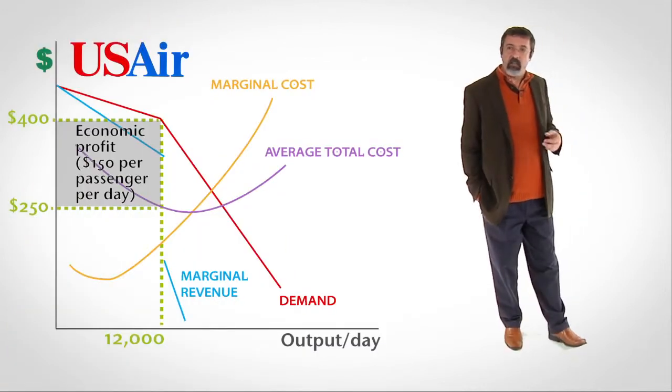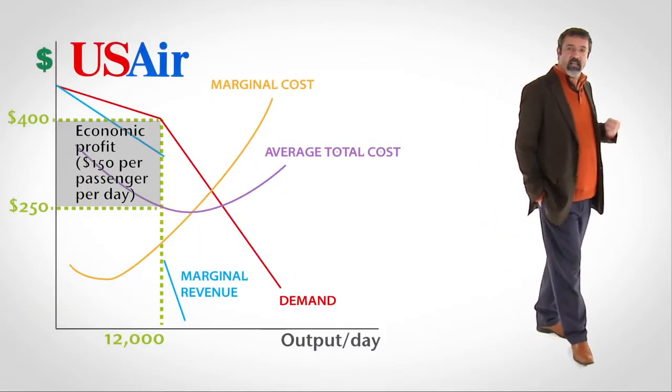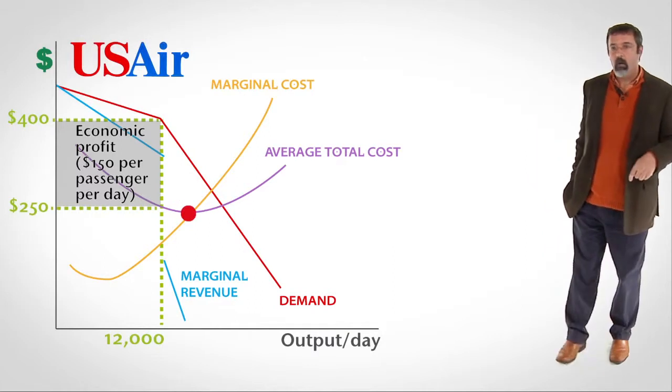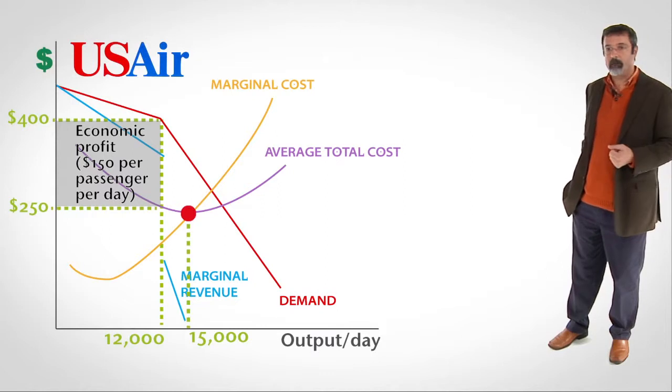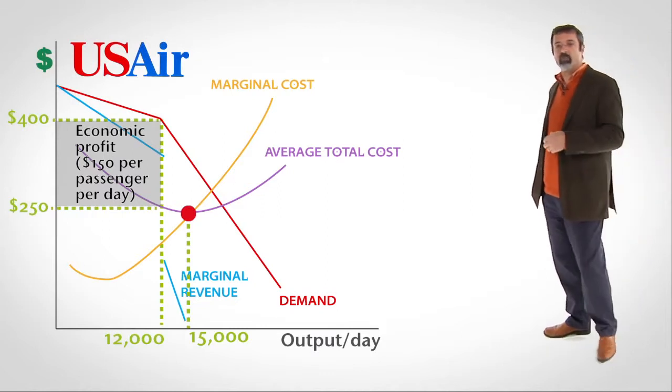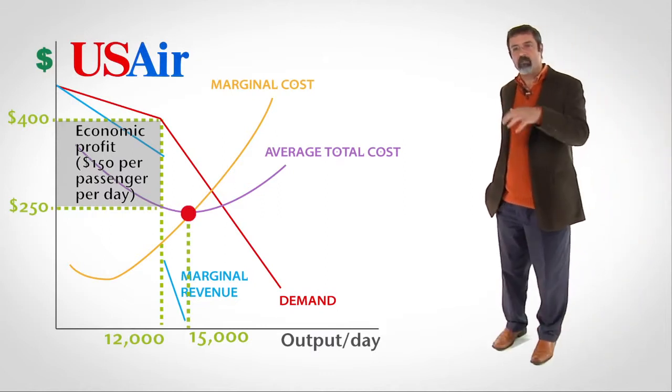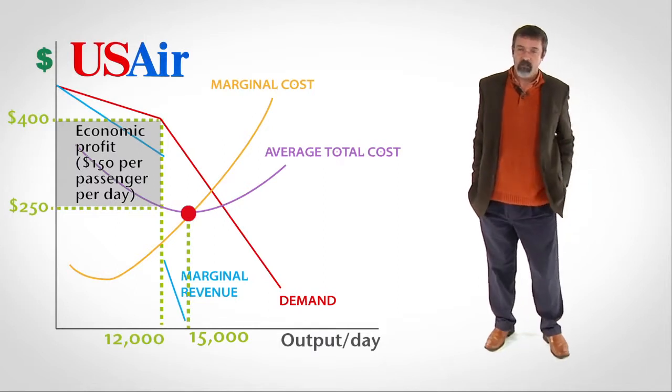U.S. Airways' efficient output level is located at the minimum of the average total cost curve, or fifteen thousand passengers per day. Because U.S. Air will choose to produce at the profit-maximizing output level, the airline will be inefficient.